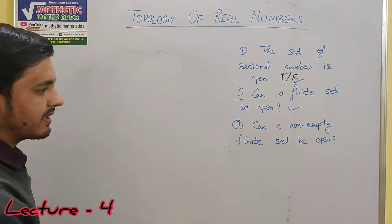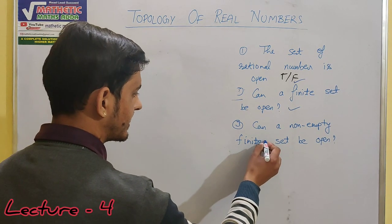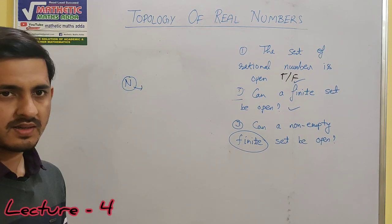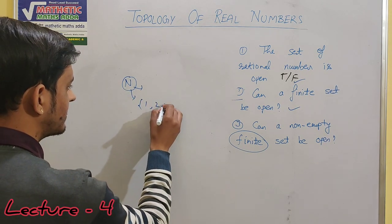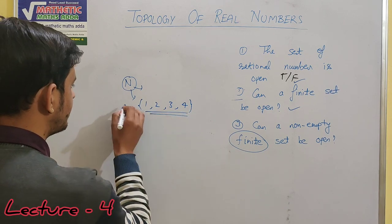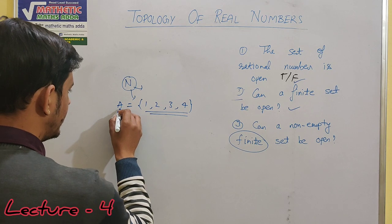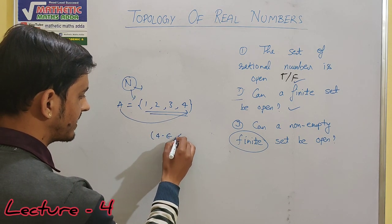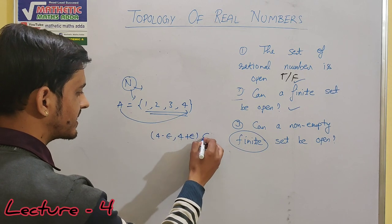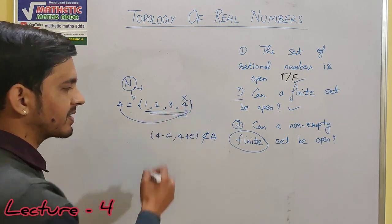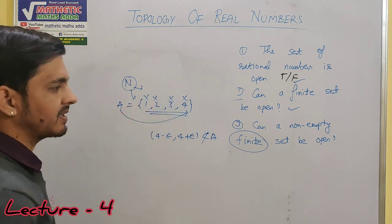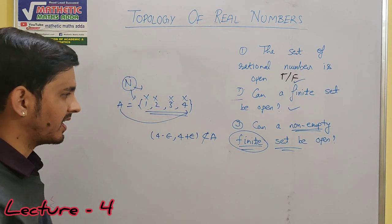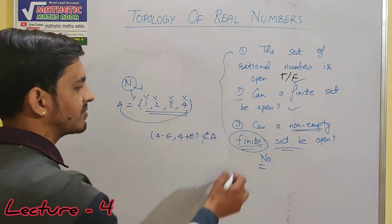Third question: can a non-empty finite set be open? इसका example देखो — set of natural numbers में से कुछ numbers लिए। क्या यह set A, point 4 का neighborhood होगा? 4 को contain करने वाला जो भी open interval लेंगे — (4-ε, 4+ε) — वो इस A का subset नहीं आएगा। इसका मतलब यह 4 का neighborhood नहीं है। 3 का भी नहीं, 2 का भी नहीं, 1 का भी नहीं। तो जो non-empty finite set है वो open set नहीं होगा — यह तीनों properties बहुत important हैं जो आपको याद रखनी हैं।